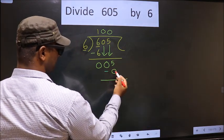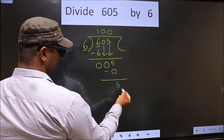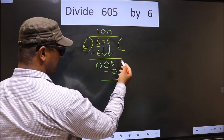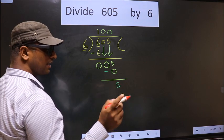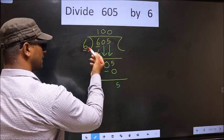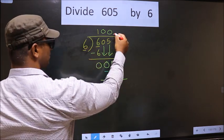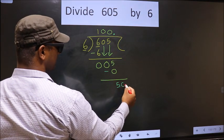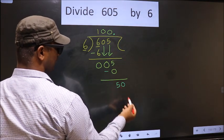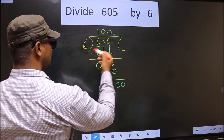Over here we did not bring any number down, and 5 is smaller than 6, so we can put a dot and take 0 here. So 50. A number close to 50 in 6 table.